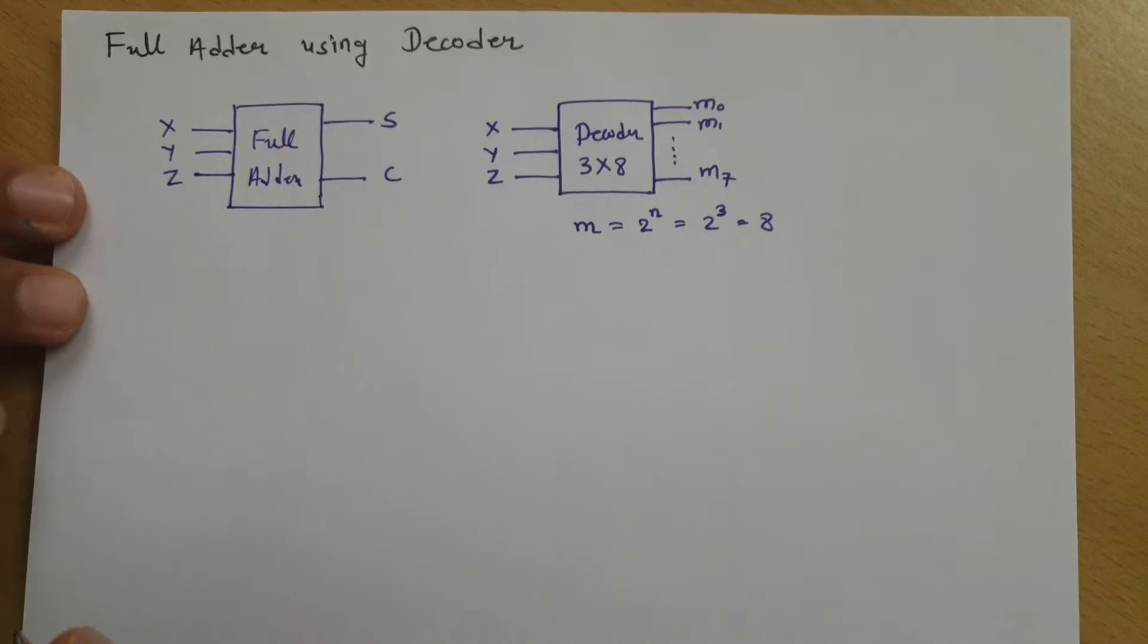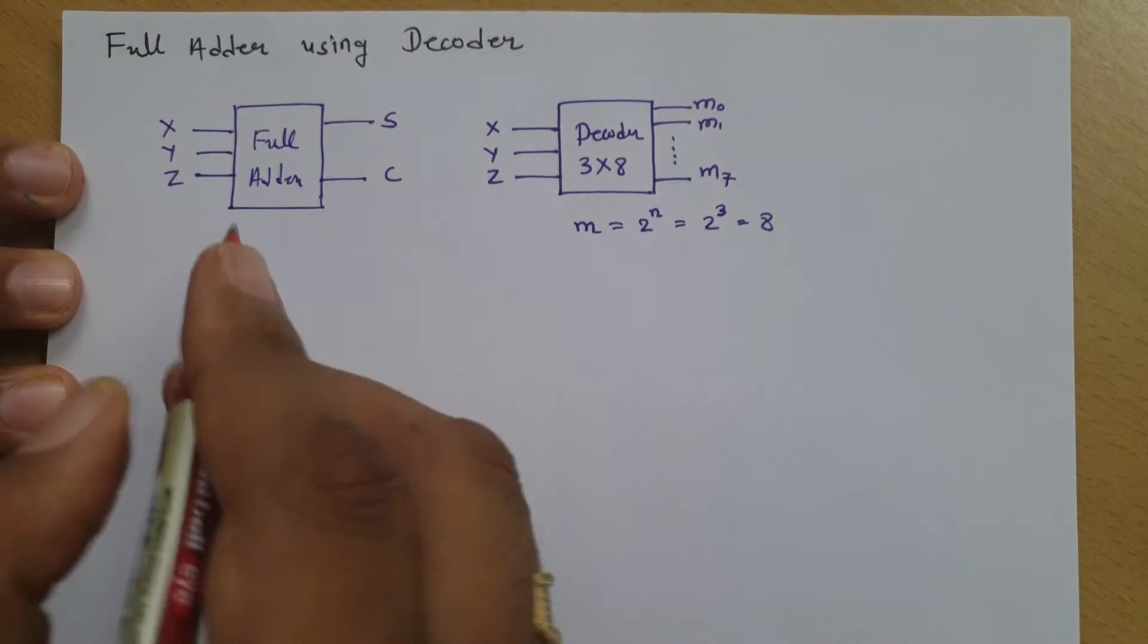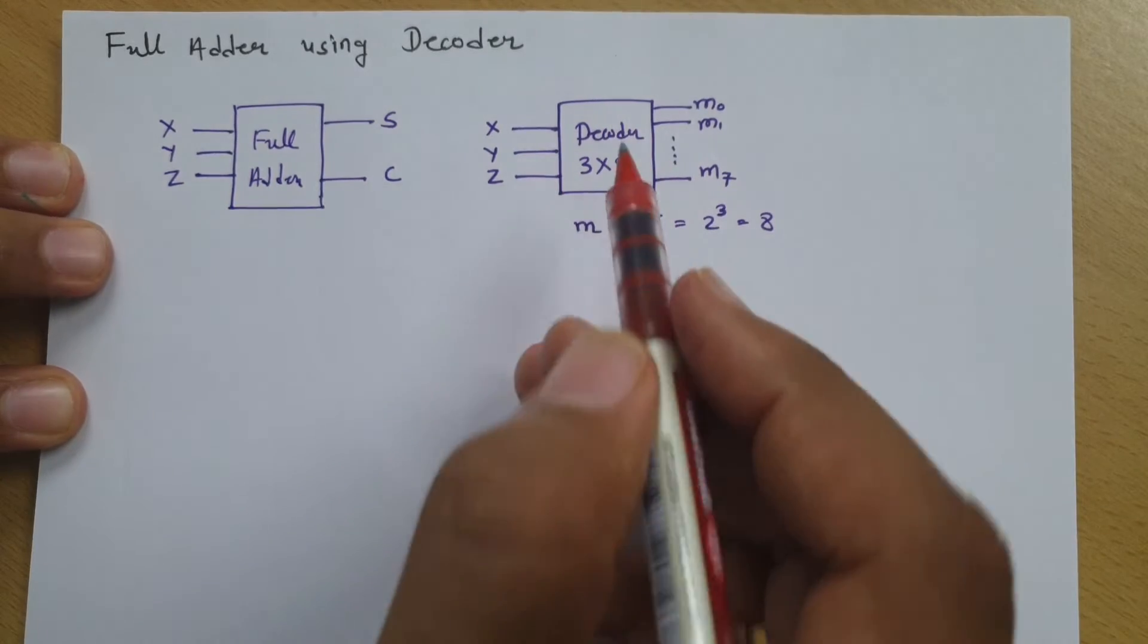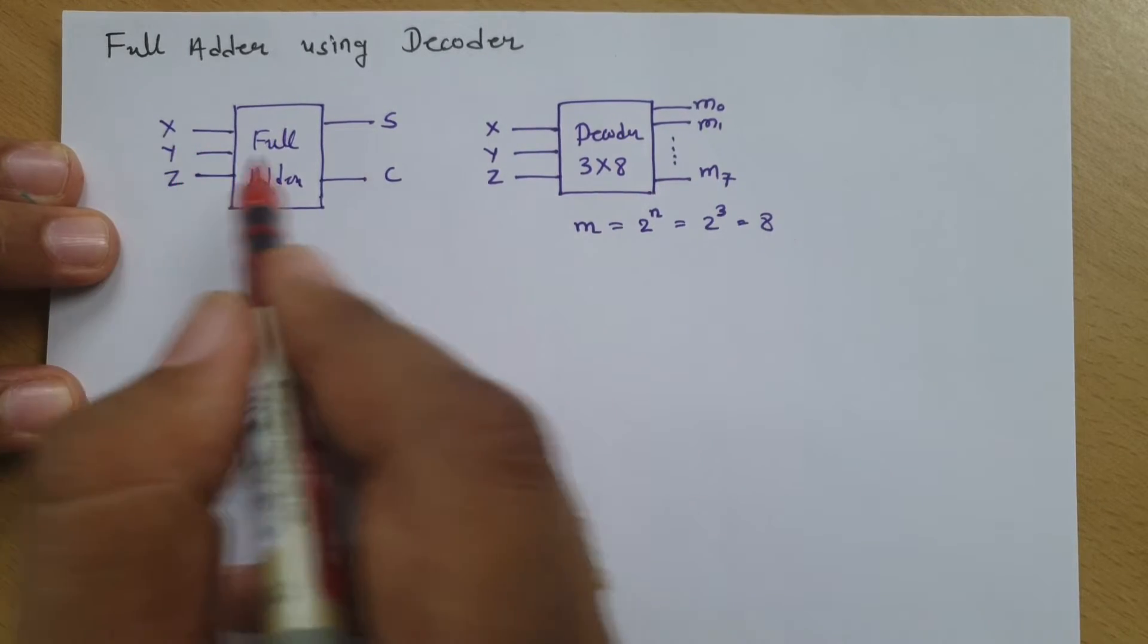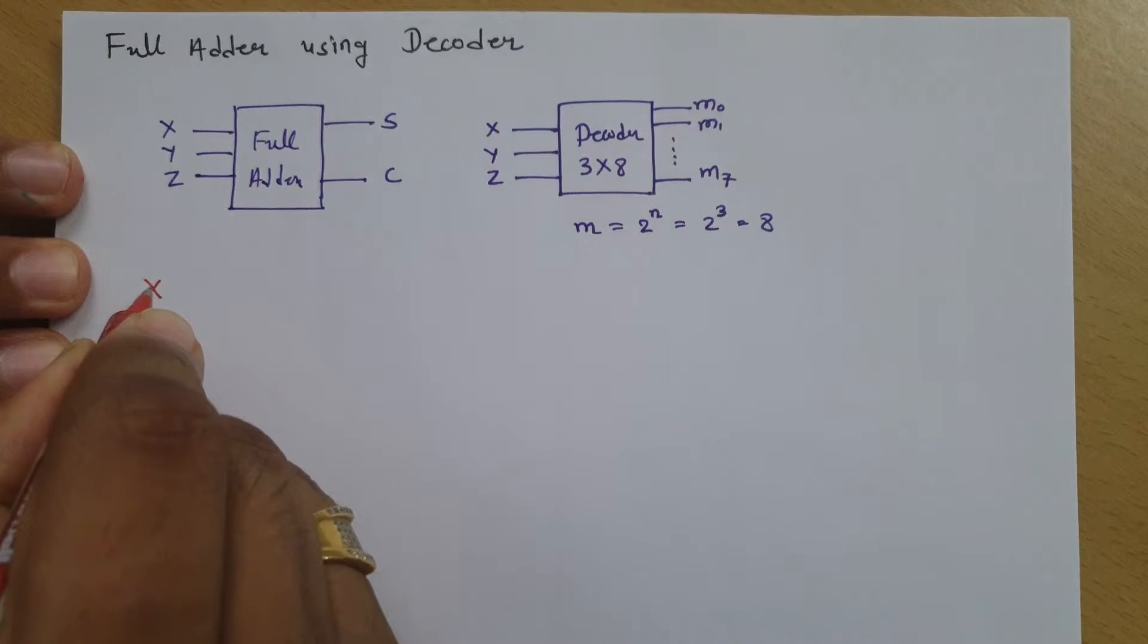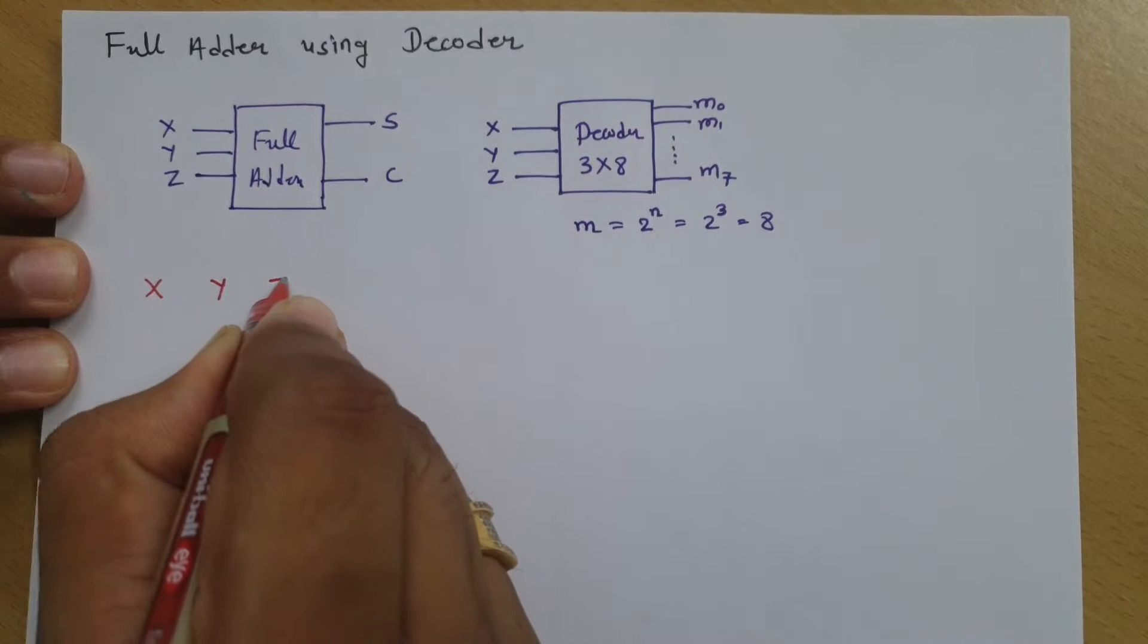That is what I will explain step by step using truth table. Let's make input truth table. In both full adder and decoder, inputs are same x, y, and z. So our inputs are x, y, and z.